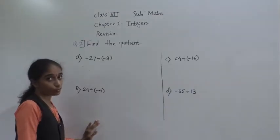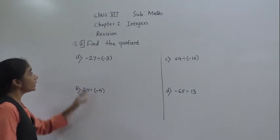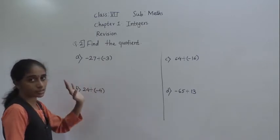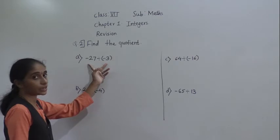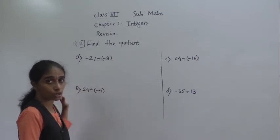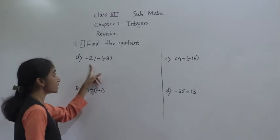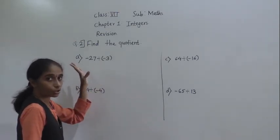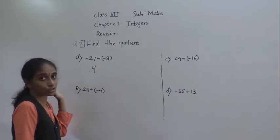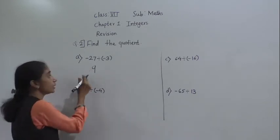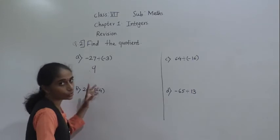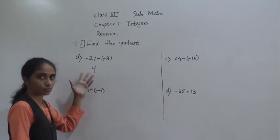Let's solve question number 2 — find the quotient. In this example, minus 27 divided by minus 3. Both the numbers are negative. When we divide a negative integer by a negative integer, we divide them as a whole number — that means 27 divided by 3. So 3 nines are 27. And put a positive sign before the answer. So plus 9 will come, or you can write only 9 — both are the same.